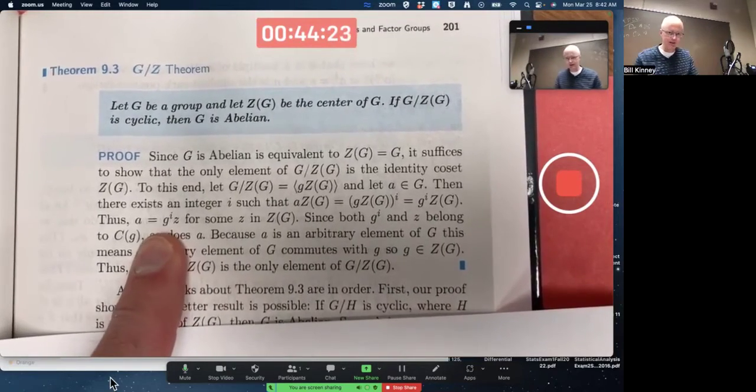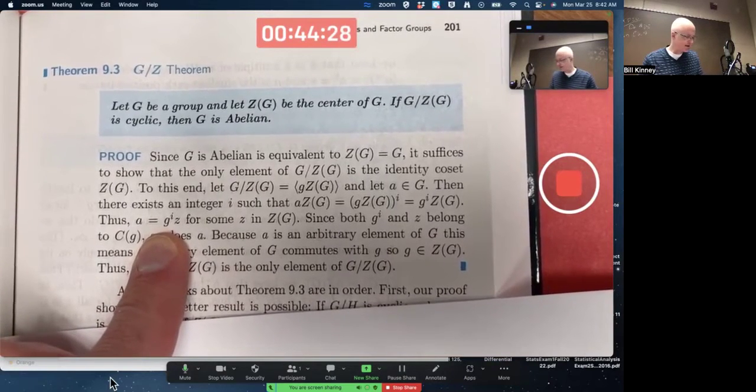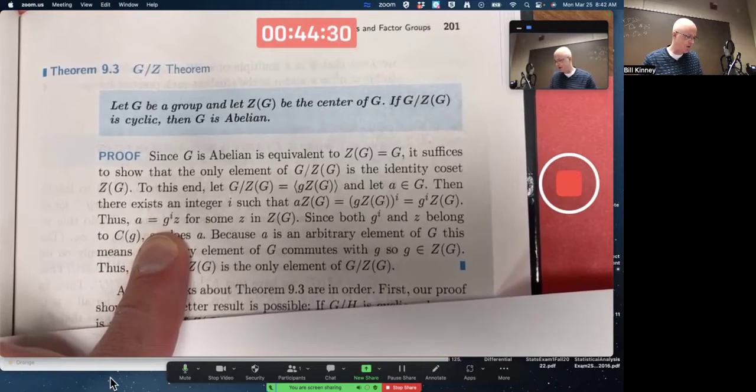But what does that mean? Thus, this is true. That's probably the hardest step right there. Thus, a equals g to the i times z for some z in Z(G). Why?